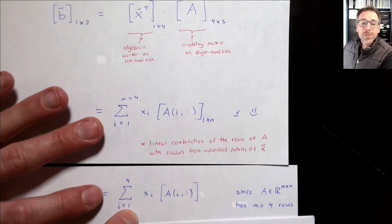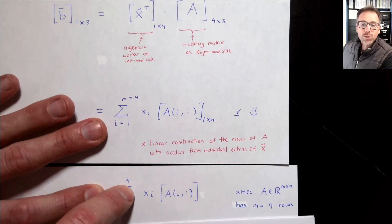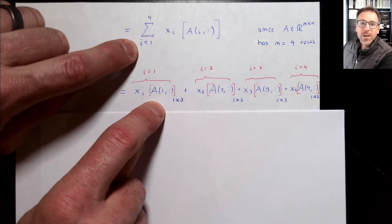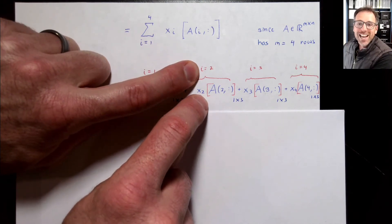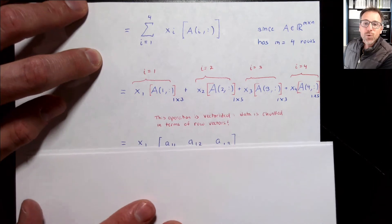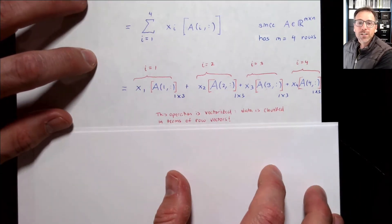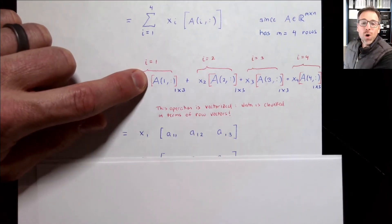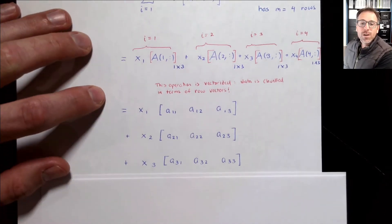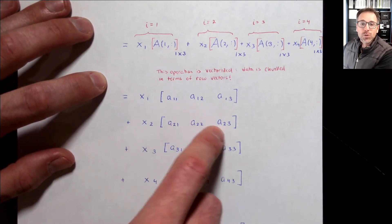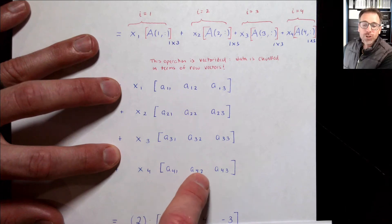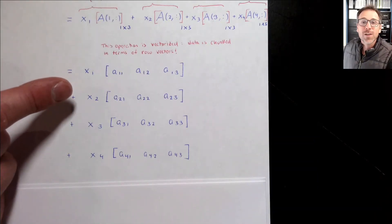Now let's translate that general definition to our specific problem. Here M equals 4, so we can write all four terms: x1 times row 1 of A, plus x2 times row 2, plus x3 times row 3, plus x4 times row 4. At the entry-by-entry level: row 1 is [A11, A12, A13] scaled by x1; row 2 is [A21, A22, A23] scaled by x2; row 3 is [A31, A32, A33] scaled by x3; and row 4 is [A41, A42, A43] scaled by x4.